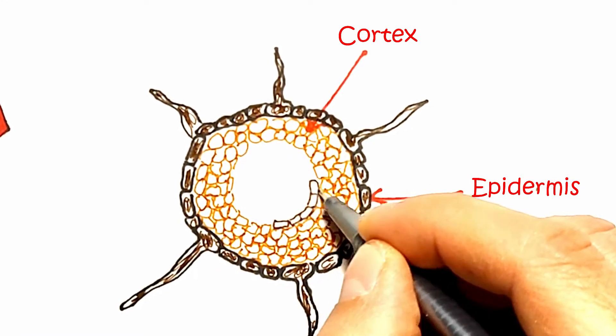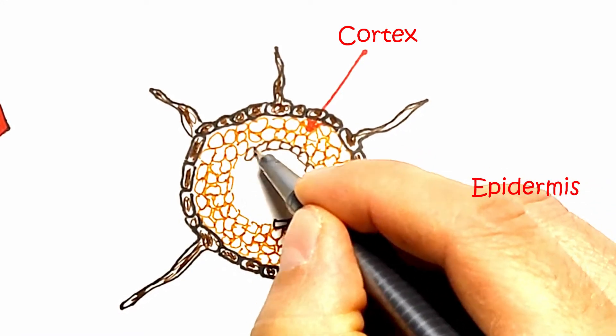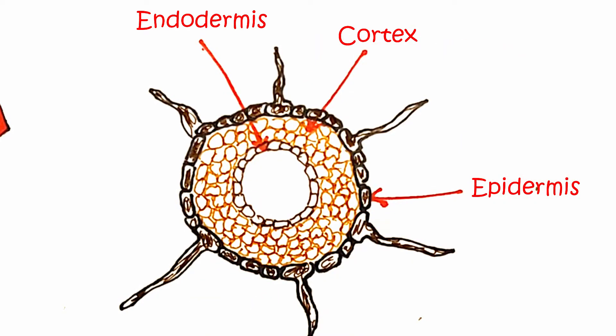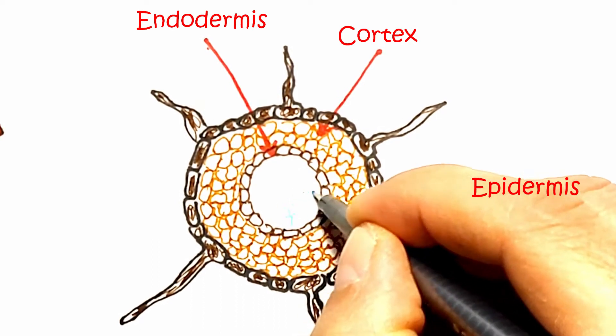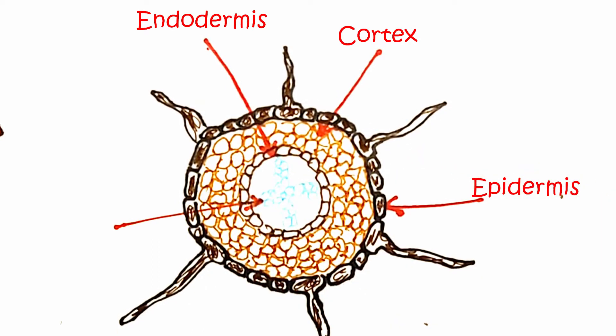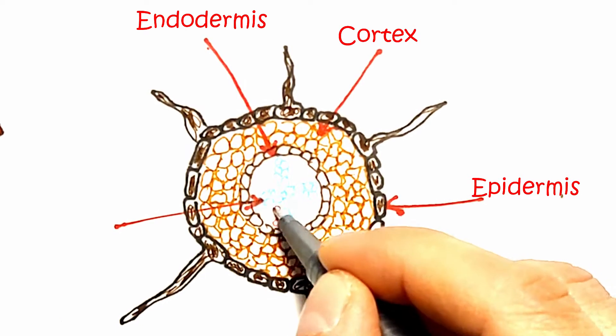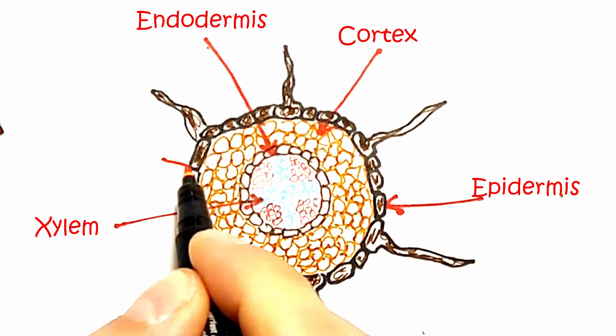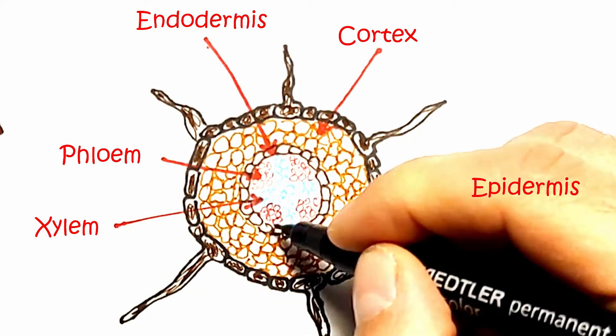Beneath these cells are cells that build the root cortex, which is separated from the central cylinder by the layer of endodermal cells. The central cylinder consists of two types of transport tissues: the xylem, which transports water and minerals from the roots to the leaves, and the phloem, which transports mostly organic matter through the plant.